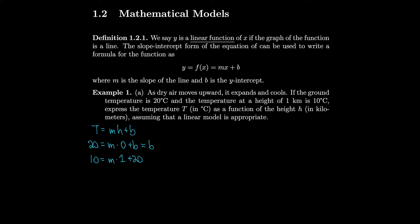Subtracting 20, we have negative 10 as our slope m. So now we have the equation: instead of m, we fill in negative 10; we keep our h; and instead of b, we fill in the 20 that we solved for. So T equals negative 10h plus 20.